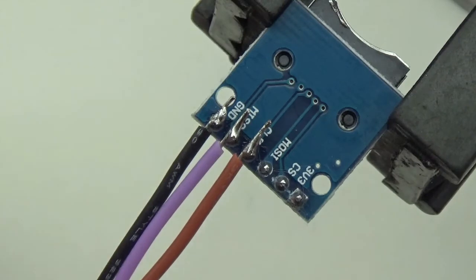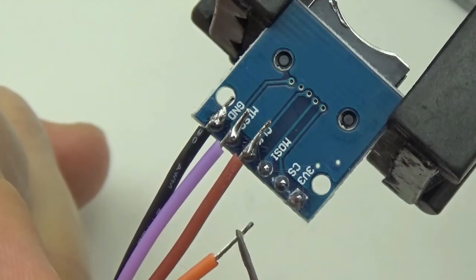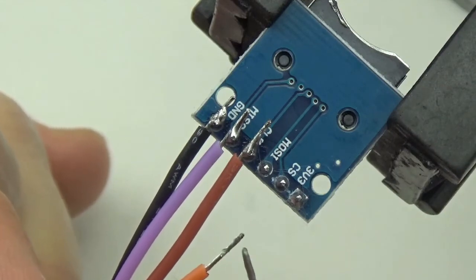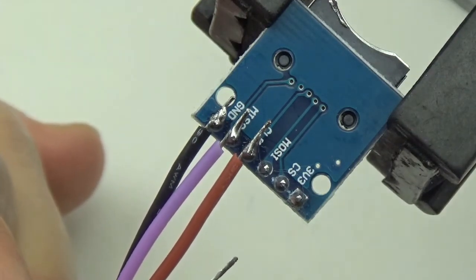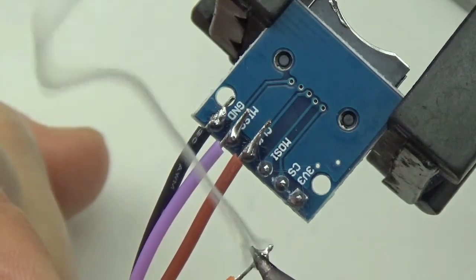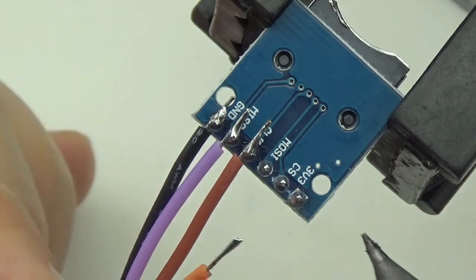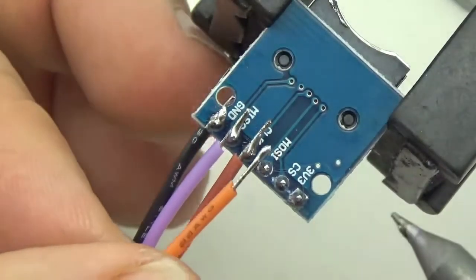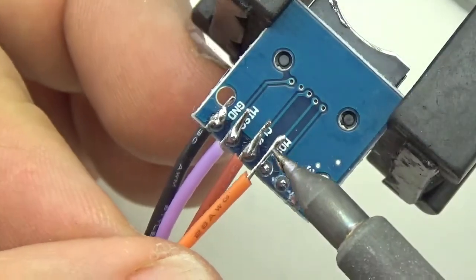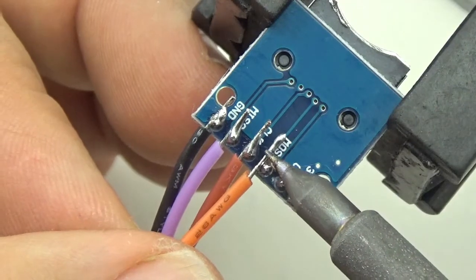What does MISO stand for? MISO stands for Master In, Slave Out. So this is another bus, which means you can hook up multiple devices to the same set of wires. And one wire in the SPI bus goes in one direction, from the master to the slave, or from the Arduino to the sensor.